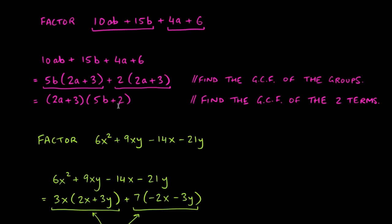So our answer is (2a + 3)(5b + 2). What we've done is essentially undone multiplication — if we multiplied these two factors together, we'd distribute and get back to where we started. This is the direction from the answer back to the original expression. In this section we're just reversing that process, starting with the expression and using clever grouping techniques to factor it.